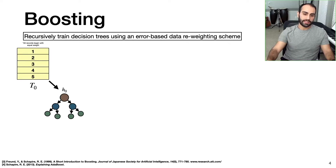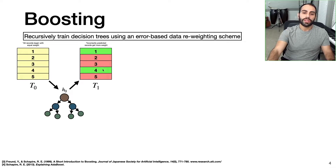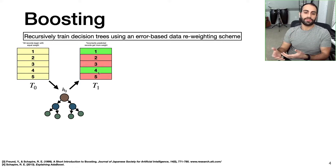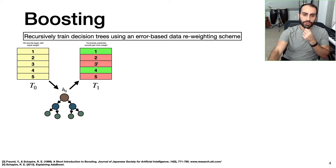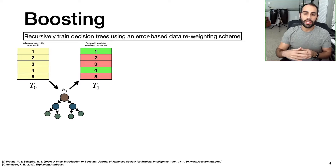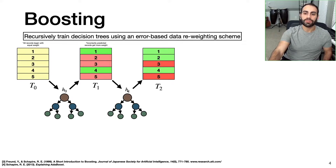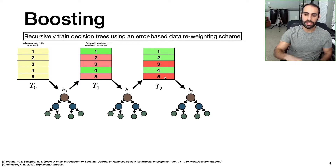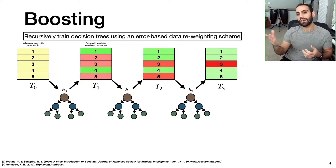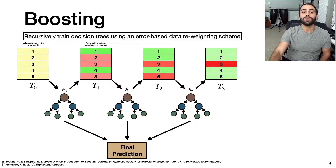We can create another training data set based on the performance of this decision tree. The different colors show that records one and four were correctly classified in this binary classification problem, while records two, three, and five were incorrectly classified. What we do now is decrease the weight of records one and four and increase the weights of two, three, and five. With that new training data set we train a new decision tree. We evaluate its predictions, see which records were correctly or incorrectly predicted, update their weights accordingly, create another decision tree, and so on. We now have a collection of decision trees, and we can aggregate their predictions into a single estimate.